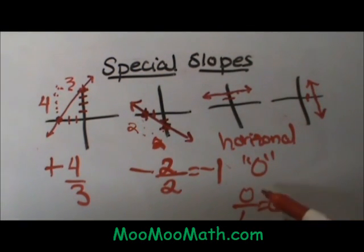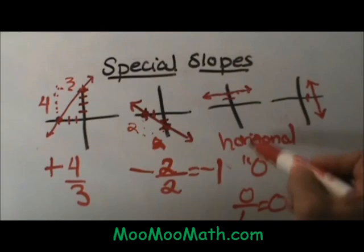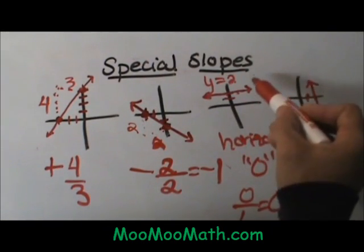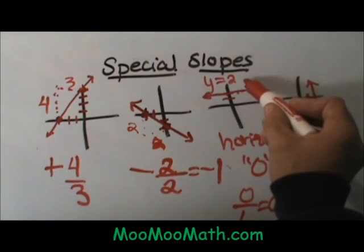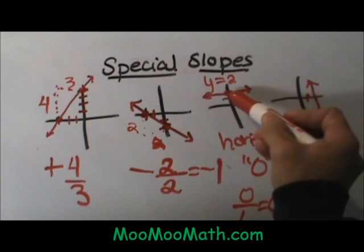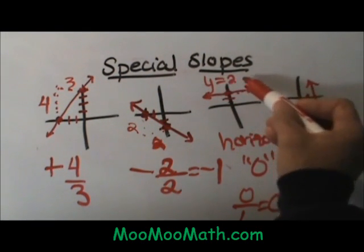Zero divided by any value is just 0. Now let's look at this last one and the equation for that line would be y equals positive 2. Whenever you have a horizontal line it is always y equals whatever constant the line is where the line crosses the y axis. Since this line crosses at 2 it is going to be y equals 2.